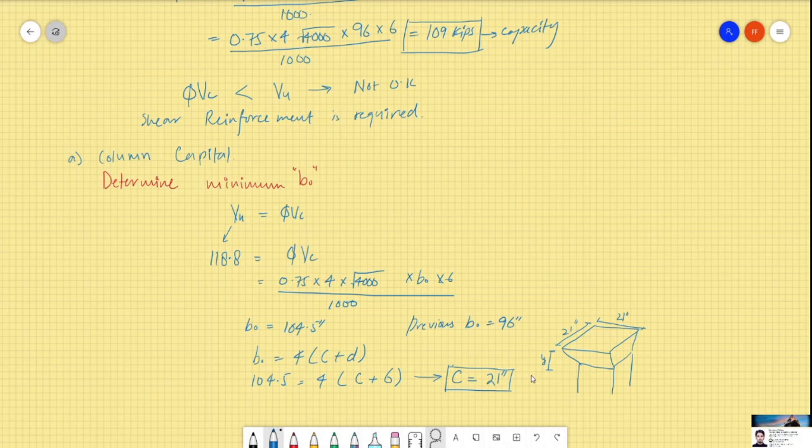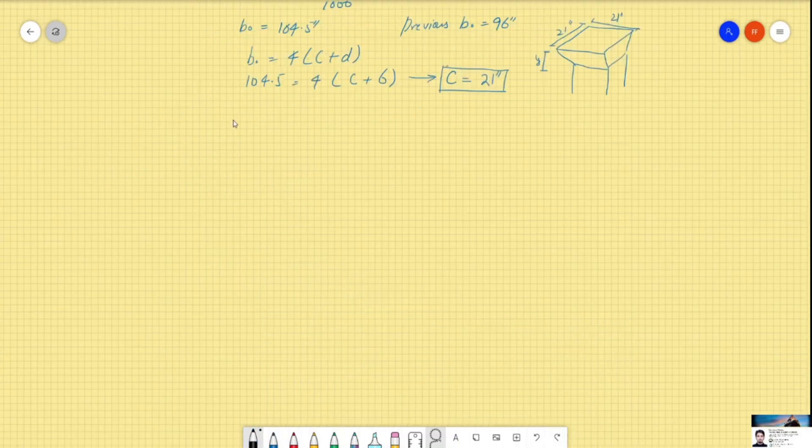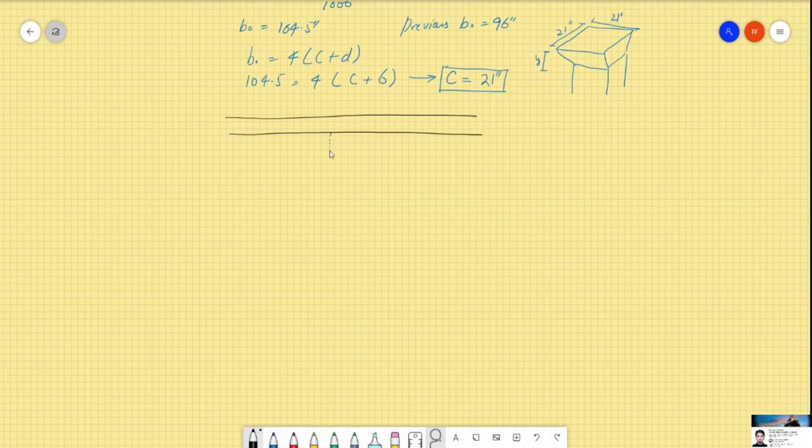Now we have to calculate the height of the column capital that is required, which is actually controlled by the angle of this column capital. So if this is our slab and this is our column...